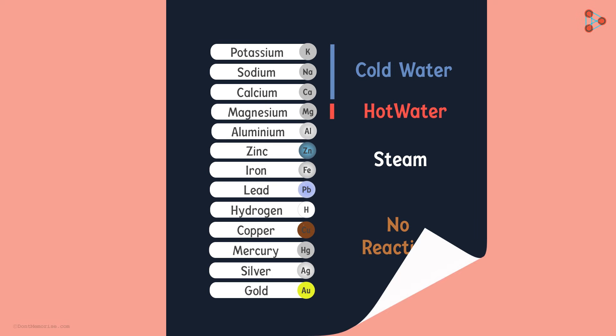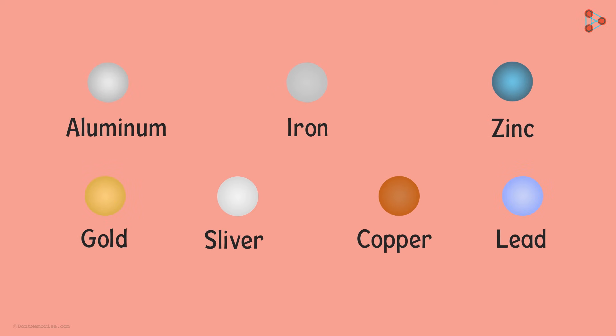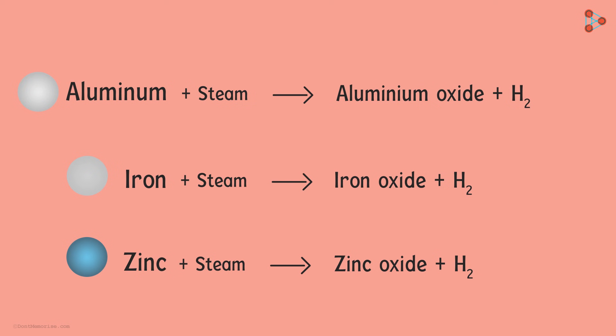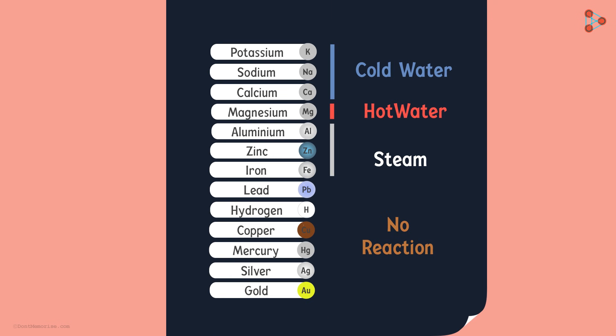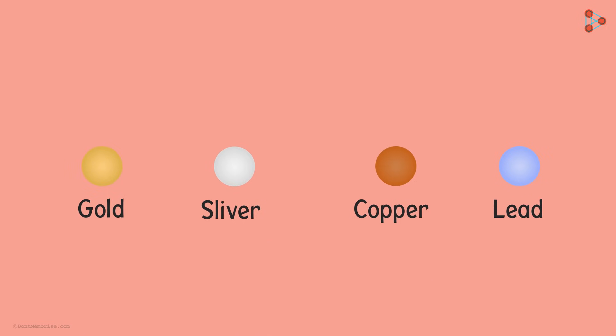The remaining metals we see here don't react with hot or cold water. But aluminum, iron and zinc react with steam to form metal oxide and hydrogen. And the other metals like lead, copper, silver and gold, don't react with water at all.